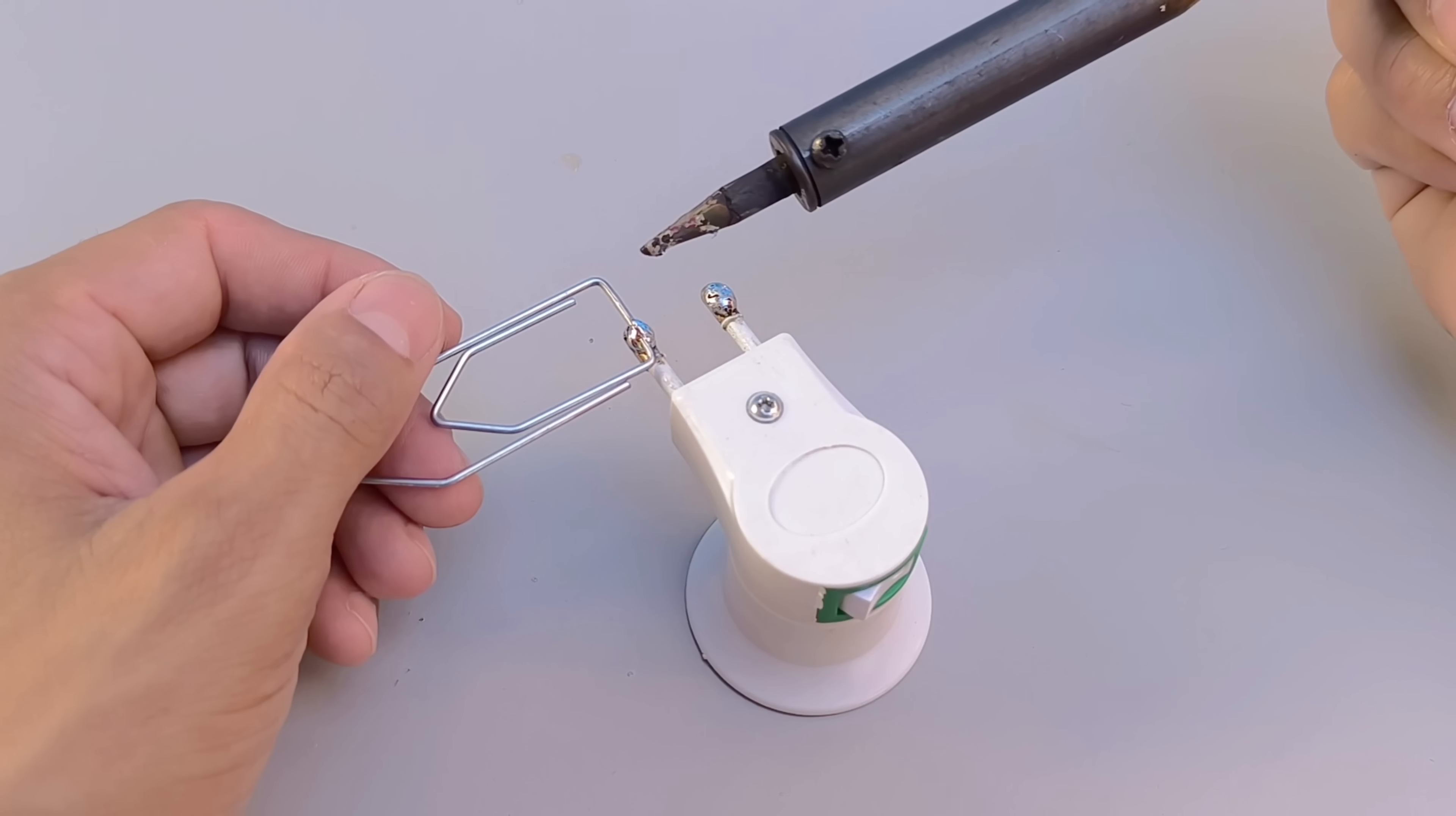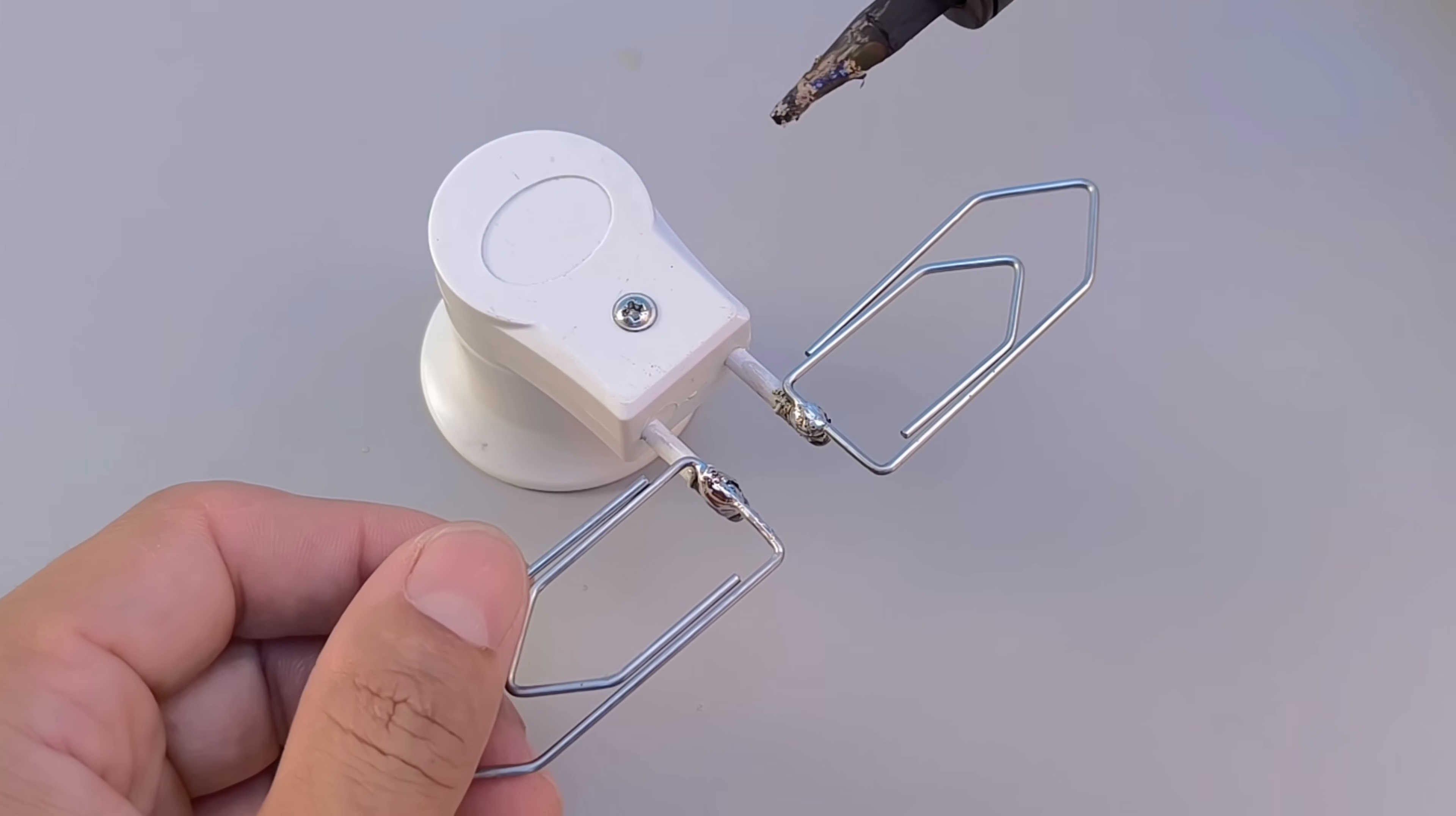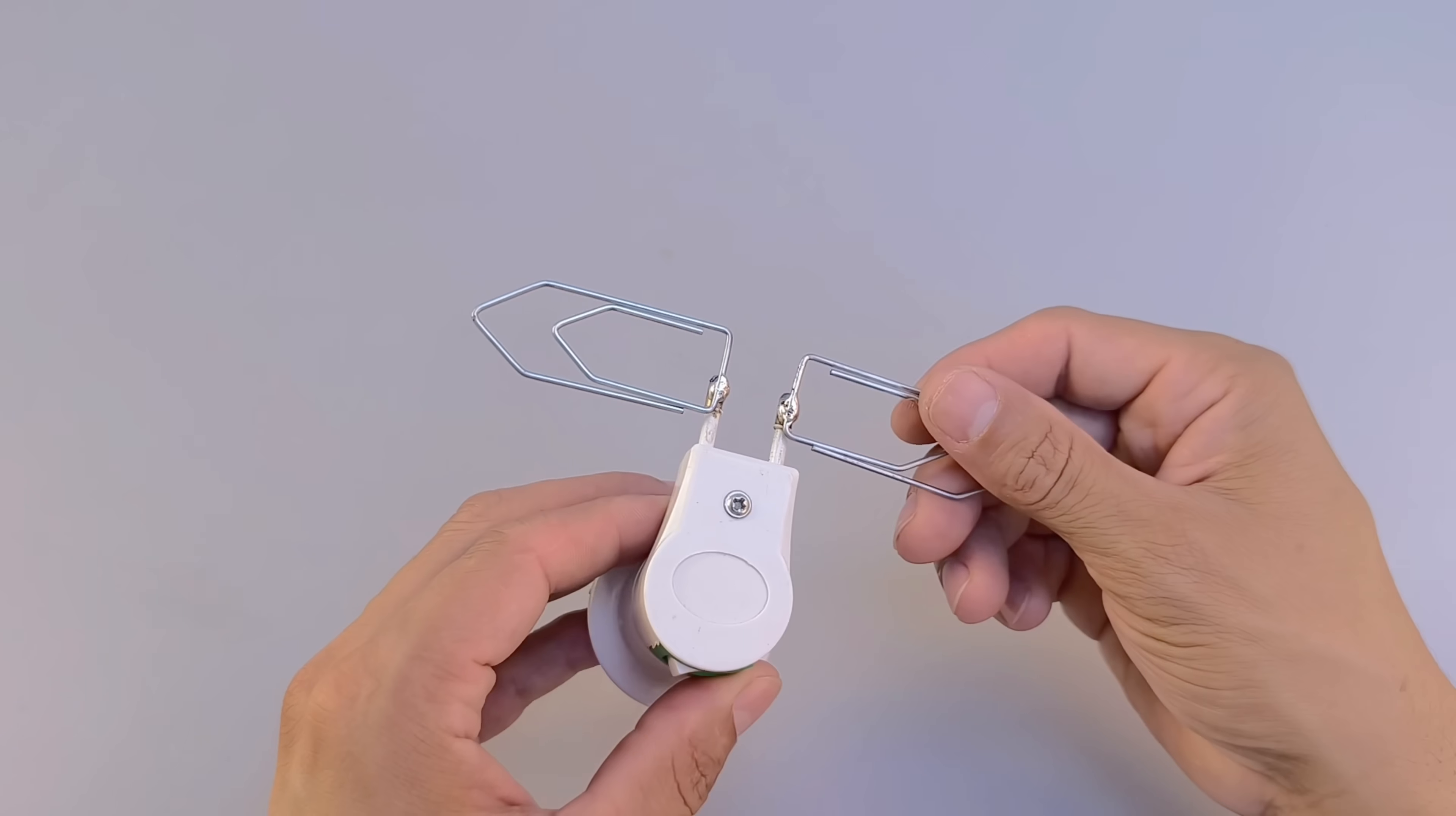Then, attach each paper clip to one of the pins by fusing them together with the melted solder. Hold the pieces still until the solder cools and hardens, firmly attaching the paper clips to the pins.